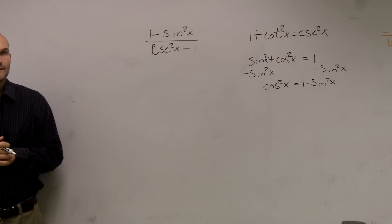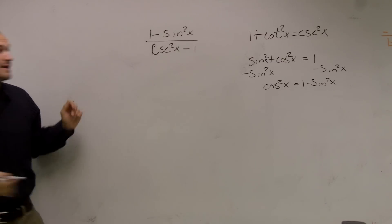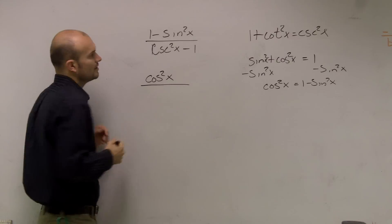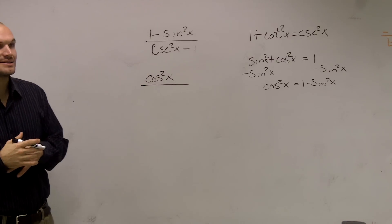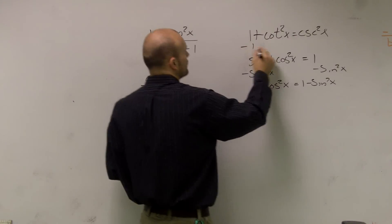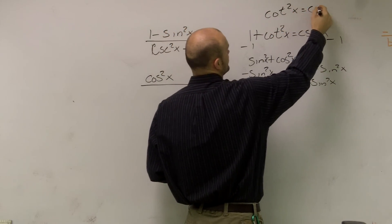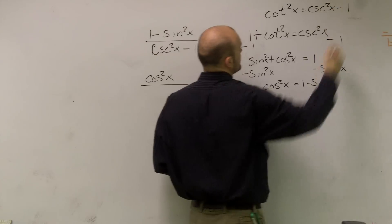So on top we can rewrite it as cosine squared over cosecant squared minus 1. If I subtract the 1 on both sides, that's going to leave me with cotangent squared of x equals cosecant squared of x minus 1.